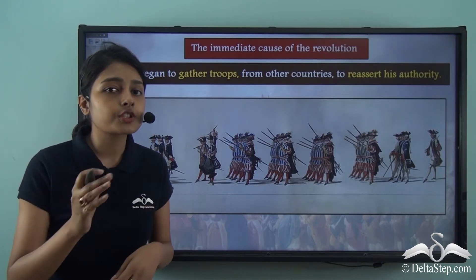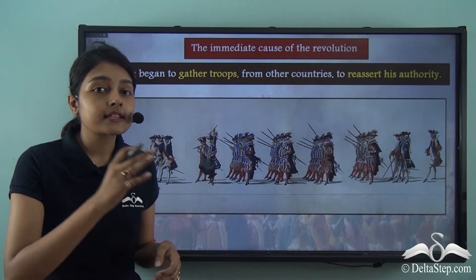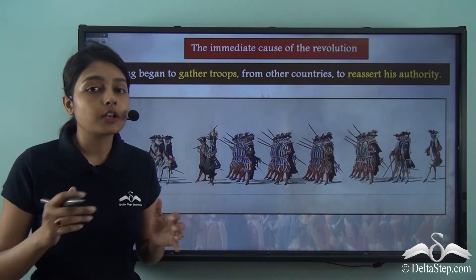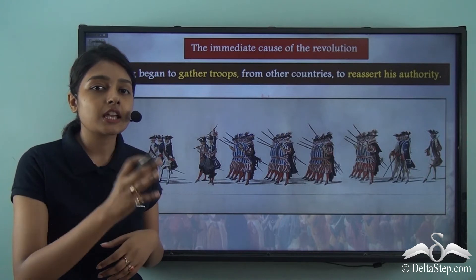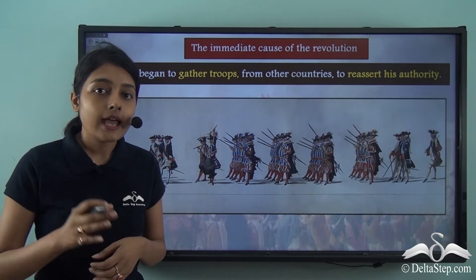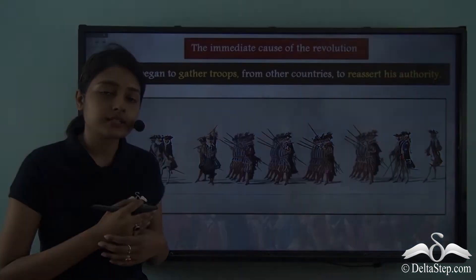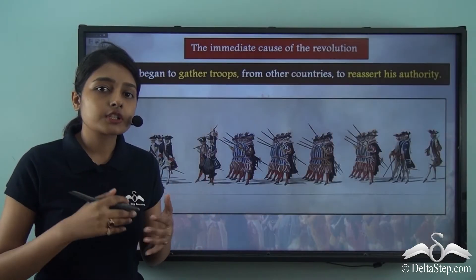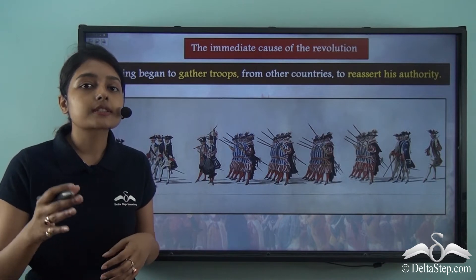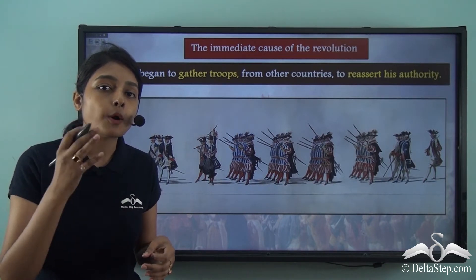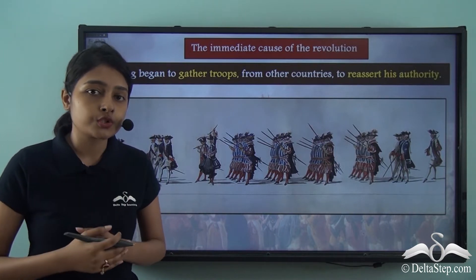This sounds very contradictory because the King never wanted to make peace with the people of the third estate. So while he was declaring the National Constituent Assembly as a legal body, his intention was something very different. He never wanted France to have a democratic constitution — it is only because of the gaining popularity of the National Assembly that he was compelled to do so.